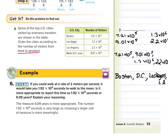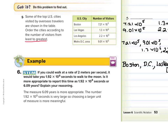Guided example 6: if you walk at 2 meters per second, it would take 1.92 times 10 to the 8th seconds to walk to the moon. Is it more appropriate to report this as 1.92 times 10 to the 8th seconds or 6.09 years? The answer is 6.09 years — the number 1.92 times 10 to the 8th is very large, so choosing a larger unit of measure is more meaningful. This is about choosing a unit that makes the most sense to people.